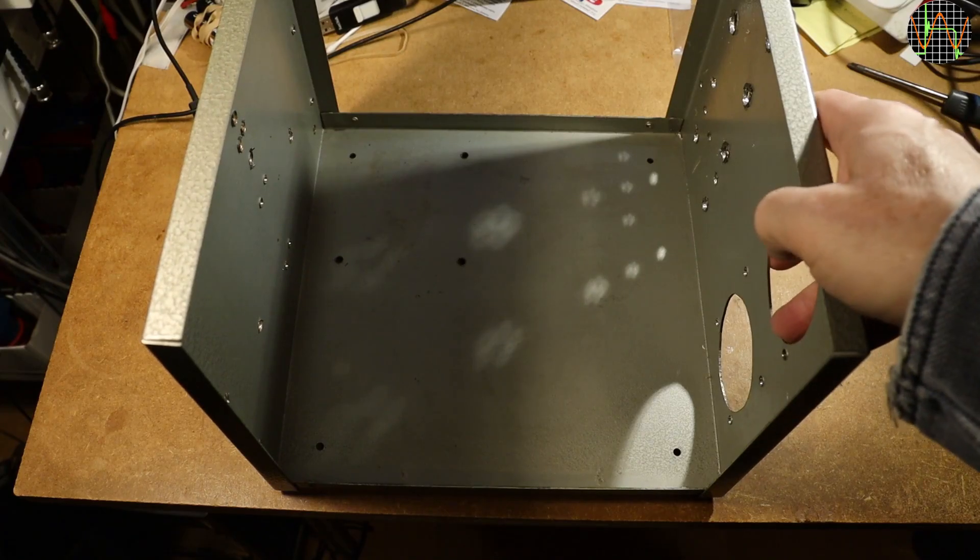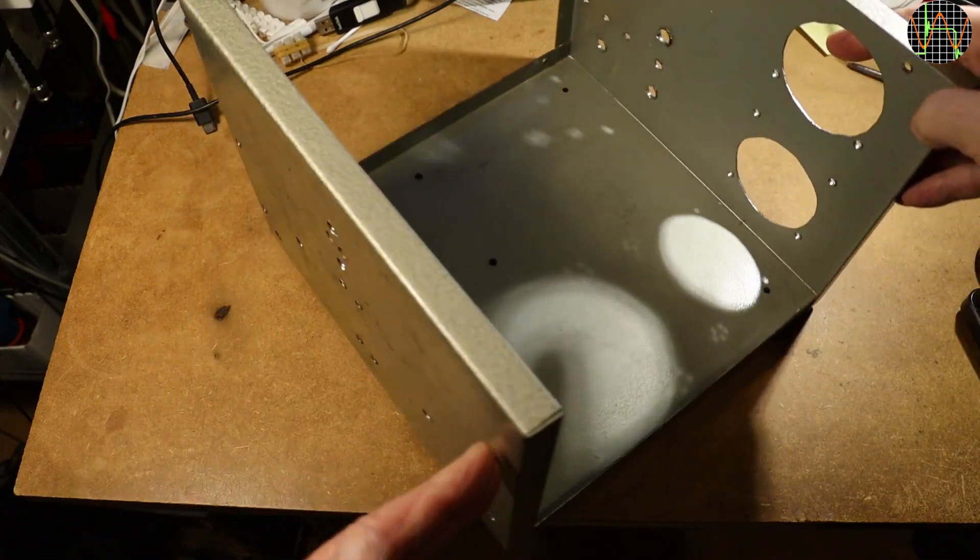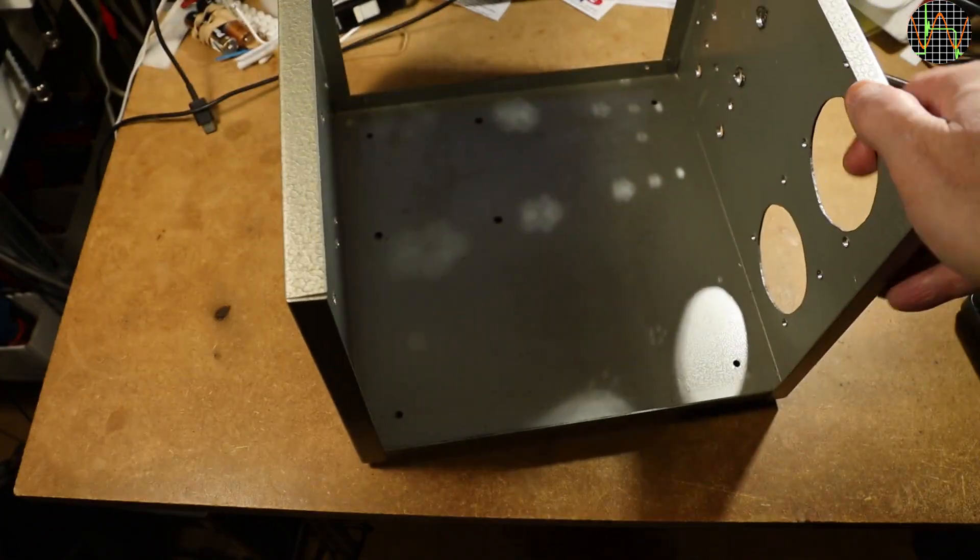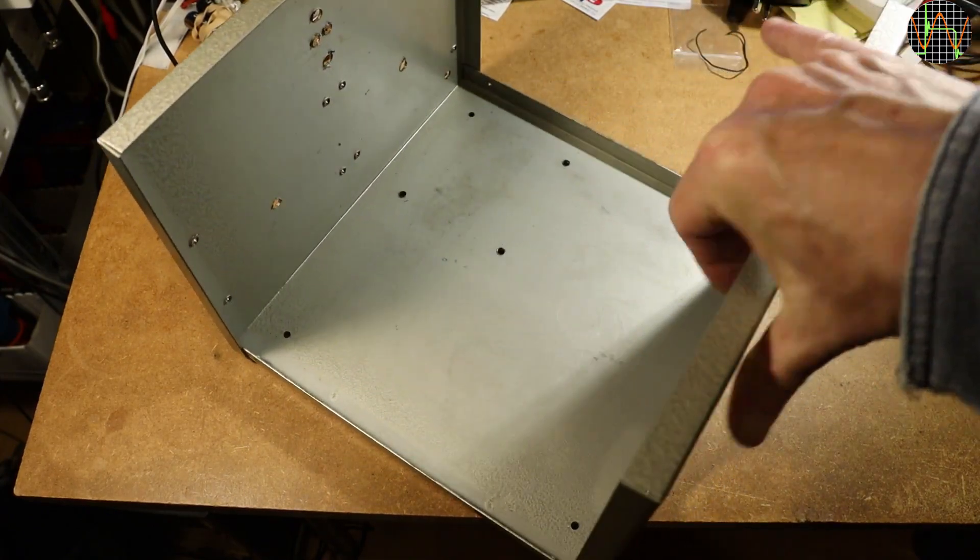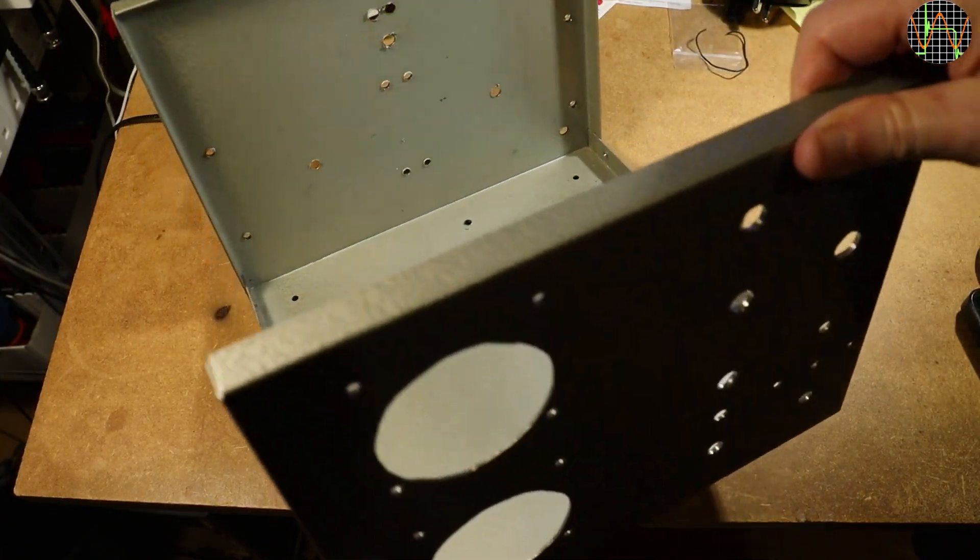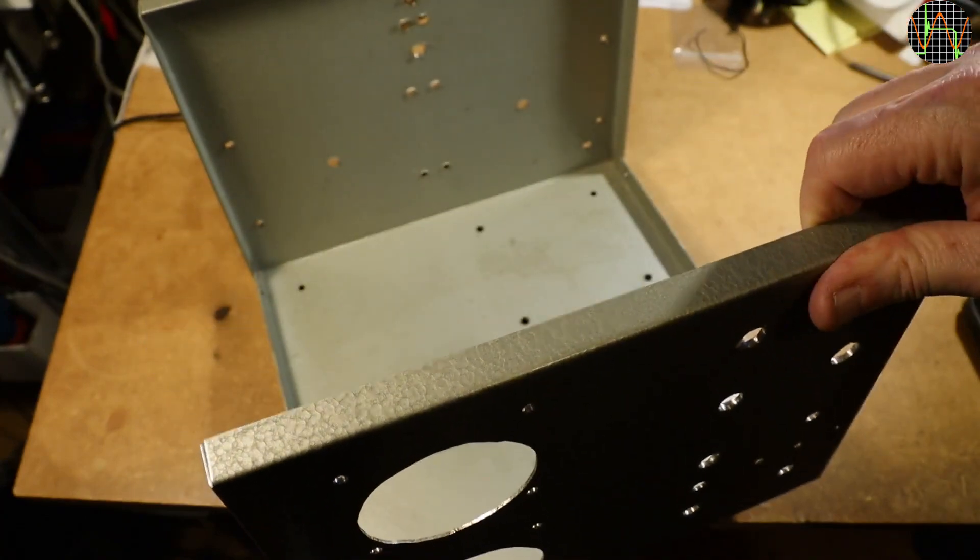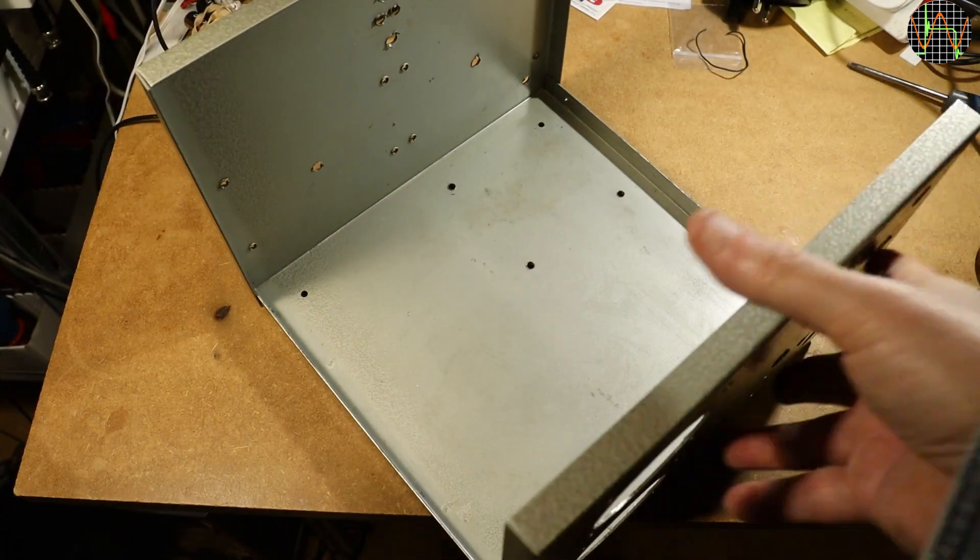I am reusing an old enclosure that once contained a DC power supply, hence the two large round holes that contain analog volt and amp meters. For this new application I am going to use the rear as the new front plate which means I will have to cover off the big holes somehow.